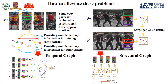As shown in the figure, we can see some parts of the person are occluded in some frames but visible in others. These parts can provide complementary information for each other. Therefore, we design a temporal graph module to model the temporal relations.